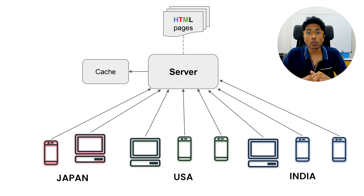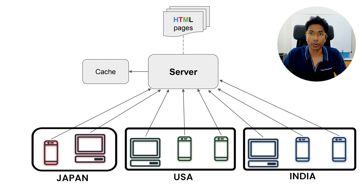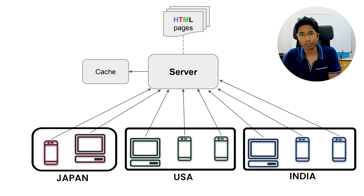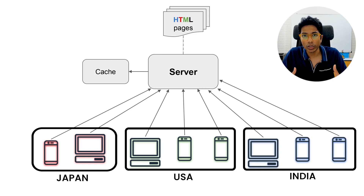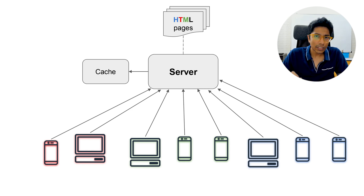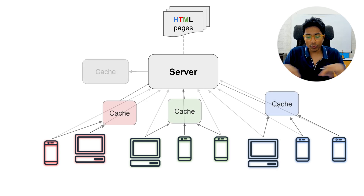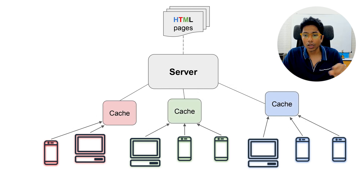The second problem is local regulations which say that data of a country can only be displayed in that country. For example, certain movies you can only show in India — not in the US, not in Japan — so you want some local storage for that country. Similarly, the US may have movies allowed to air only in the US region, not in India. For these reasons, we can take our cache and distribute it into smaller chunks around the globe.